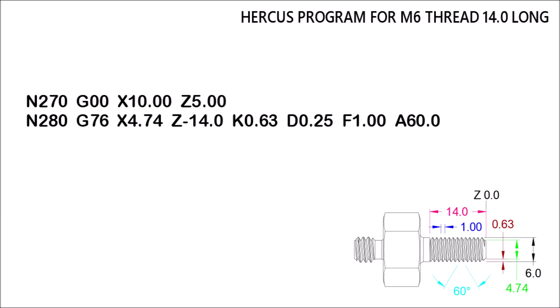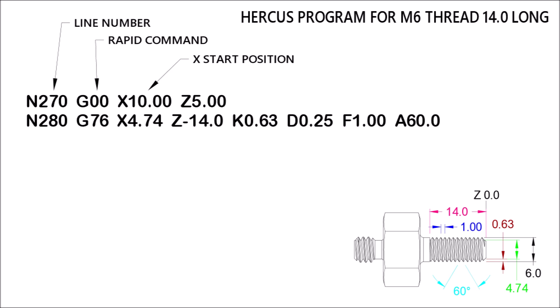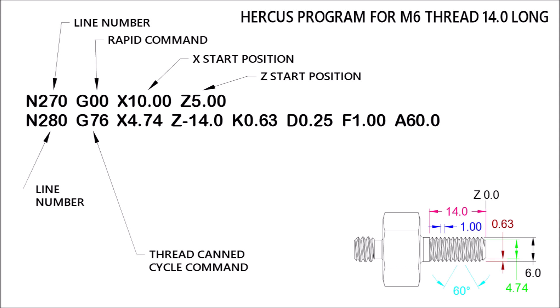Now let's have a look at those lines. The first line, N270, is just to take the tool up to where it's about to start cutting the thread, giving the X and Z start position. Then the next line is the actual G76 command line. G76 is the number that tells it it's going to be cutting a thread. There's a thread minor diameter that's worked out from the OD that was picked with the cursor.